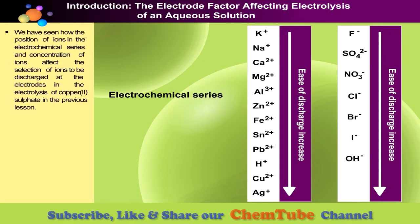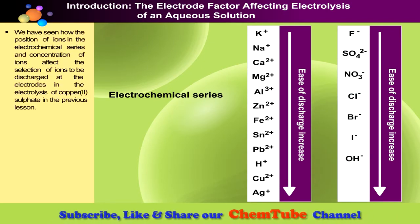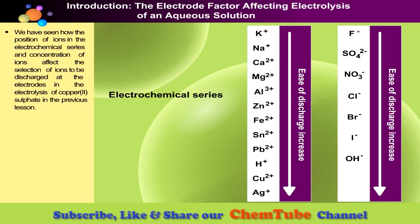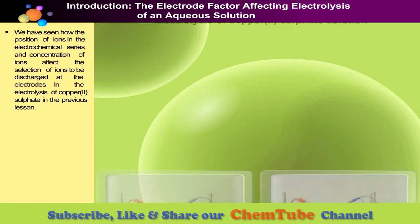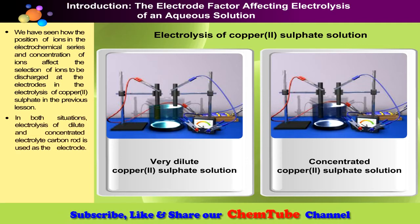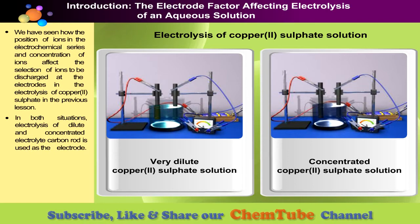We have seen how the position of ions in the electrochemical series and concentration of ions affect the selection of ions to be discharged at the electrodes in the electrolysis of copper sulfate in the previous lesson. In both situations — electrolysis of dilute and concentrated electrolyte — carbon rod is used as the electrode.